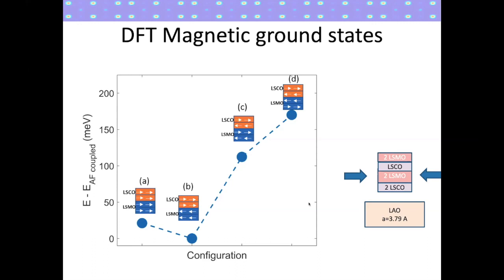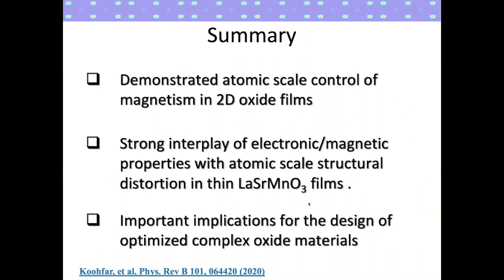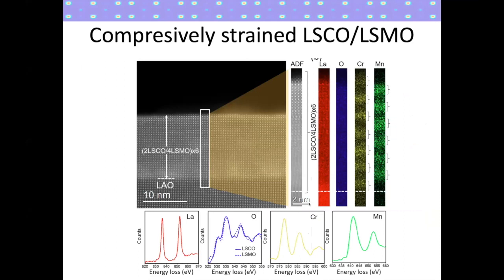Question: MBE workers growing semiconductors worry a lot about dislocations — is there a reason to be worried about dislocations in this system, and would you see them if they were there? Answer: We've grown bad films where we've seen dislocations, but from TEM measurements on these films we see very few dislocations. When we grow on MgO, where the strain is very large, the film relaxes and we do see strong evidence for dislocations, which should affect transport. But in the samples shown here, the crystal quality is high.